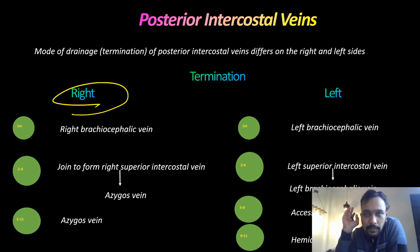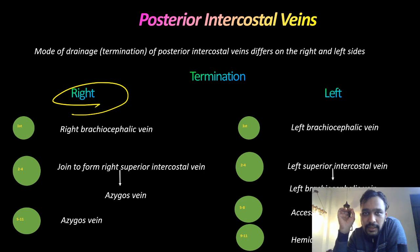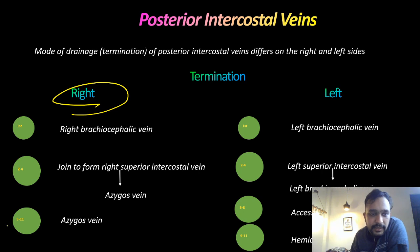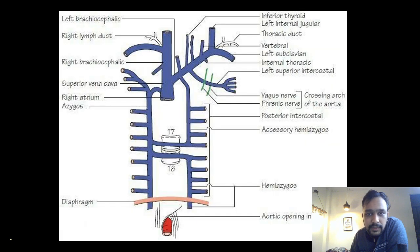On the left side, from the 5th to the 8th left posterior intercostal veins, they are draining into the accessory hemi-azygous vein. The 9th, 10th, and 11th posterior intercostal veins are draining into the hemi-azygous vein.